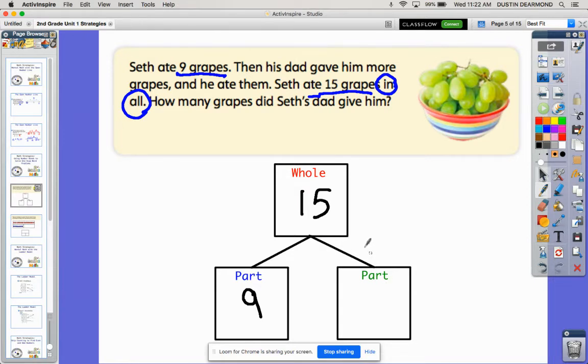We use that number bond to help us figure out what's missing. Now I can count on - I can start with nine and count on to 15. Or if I know my facts, I might know that nine and six give me 15. So his dad gave him six grapes.